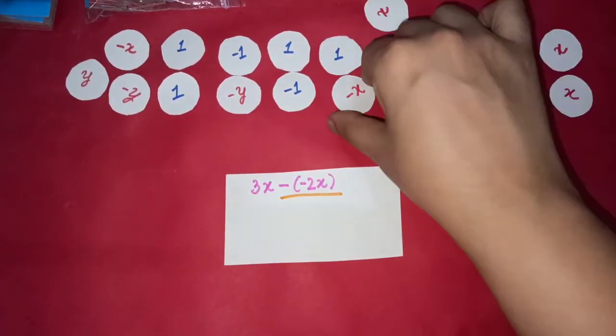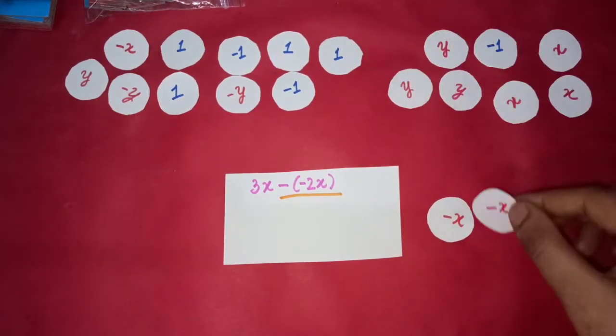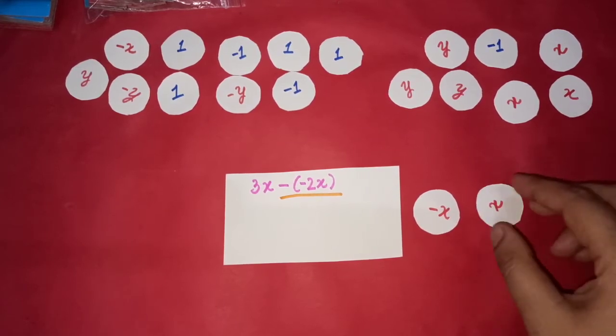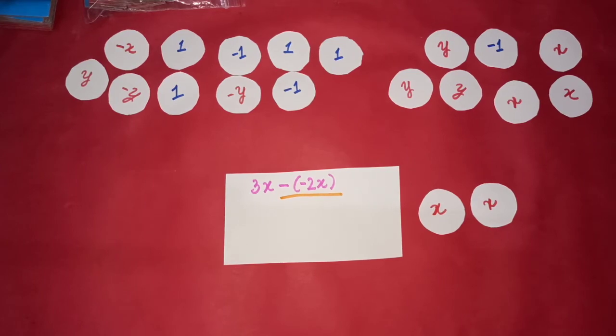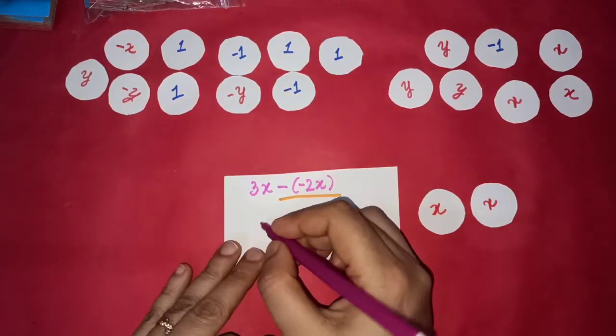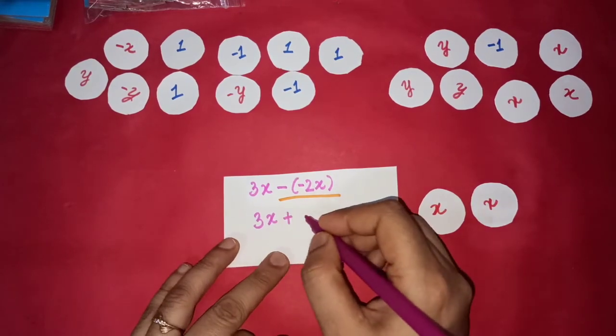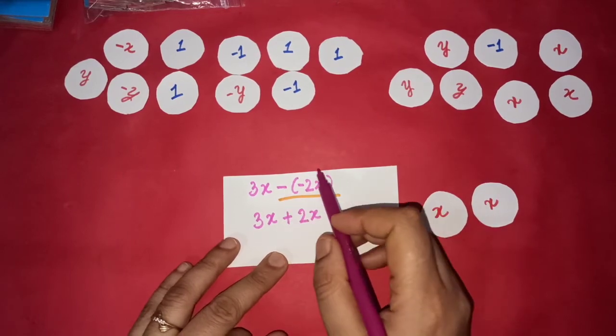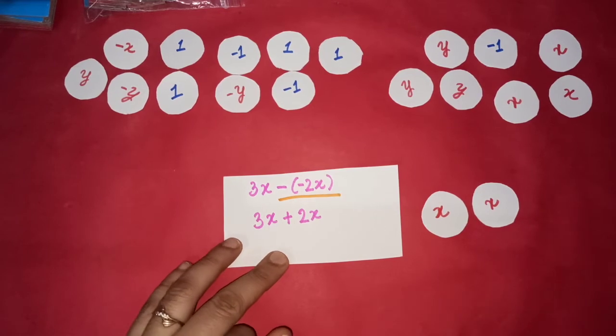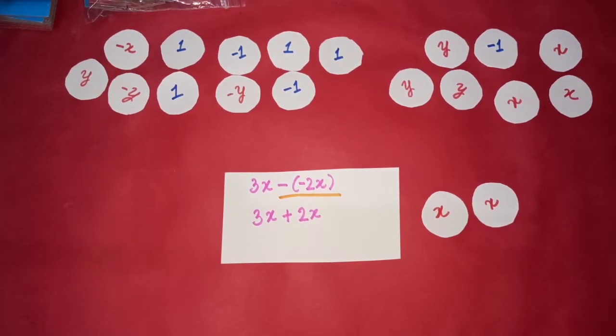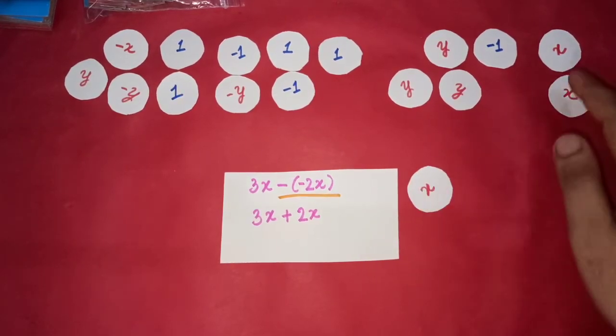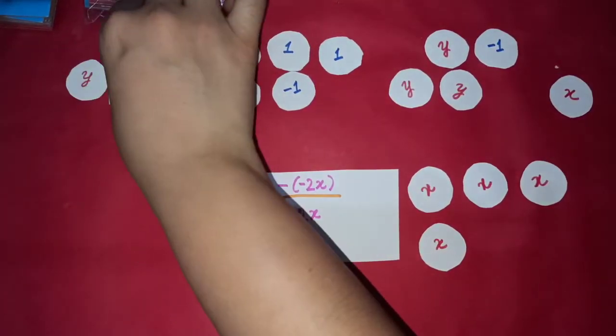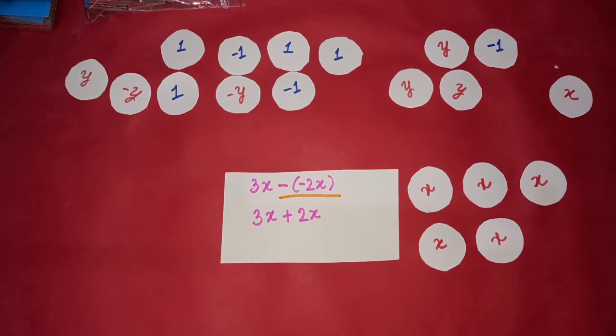If I have 2 negative x's with me, these are 2 negative x's. I have to take the negative of these. That means I need to flip them. So they will become positive. That means my question is same as 3x plus 2x. Because now, because of this negative sign, my negative 2x has flipped into positive 2x. So that means I have to add 3x and 2x. So the answer is straight away 5x.